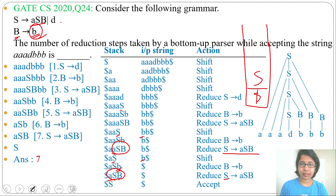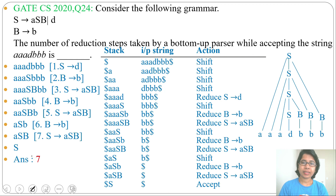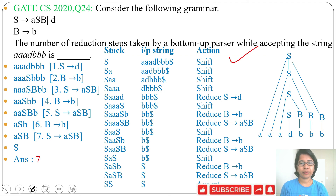Now the stack contains dollar S. At the end of parsing, if the stack contains the initial symbol, it will accept. Now count the number of reductions: 1, 2, 3, 4, 5, 6, 7 — there are 7 reductions. I discussed three ways — you can solve in any way you find easier. I discussed shift-reduce parsing; go through that lecture to easily understand it. If this lecture was helpful, please like and subscribe. Thank you.